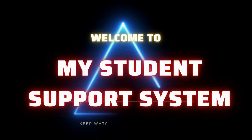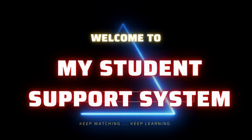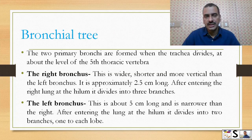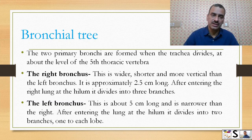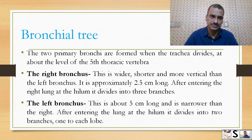The next part is the bronchial tree. We call it a tree because its structure is branched like a tree, with the two primary bronchi forming the main divisions.